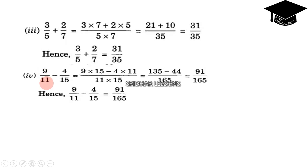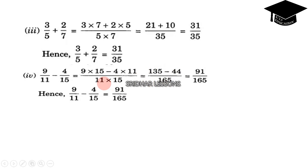Next: 9 by 11 minus 4 by 15. Taking LCM as 11 into 15, that is 165. So 9 into 15 minus 4 into 11 gives 135 minus 44 by 165, which is equal to 91 by 165.